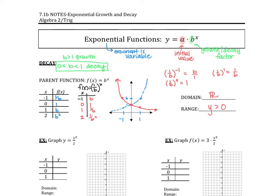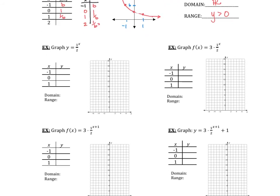So here's my parent decay function: negative 1 is b, 0 is 1, 1 is 1/b, and 2 would be 1/b squared. Let's look at what that looks like in a couple of problems. These problems look pretty similar — the only thing that's changed is the decay rate. You should notice that the b value in each of these is one half. The parent function is based only on b to the x power, so since b is 1/2, let's think about what that looks like.